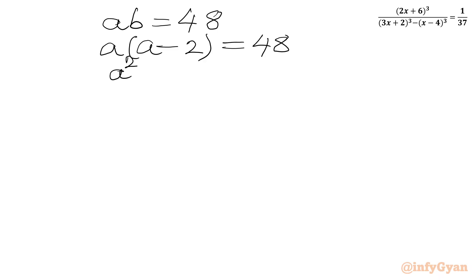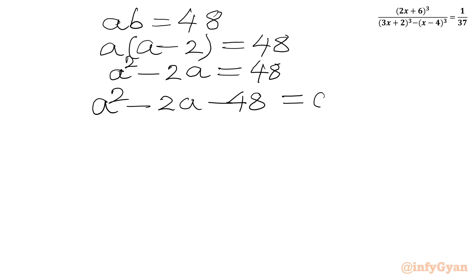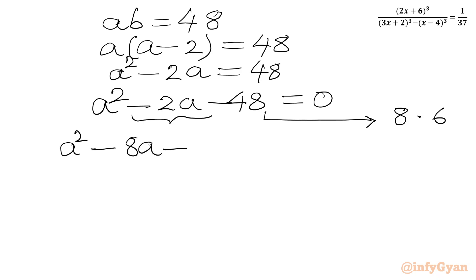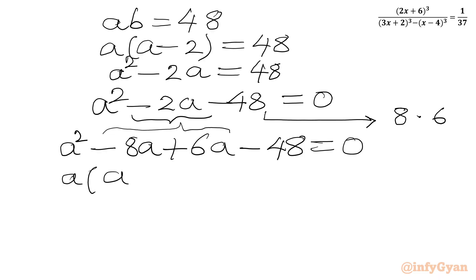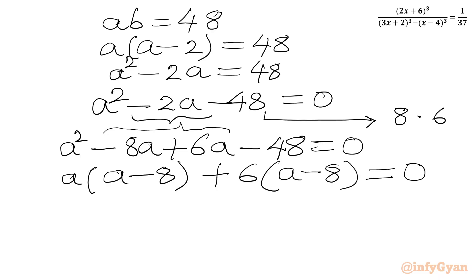This gives us a² - 2a - 48 = 0. This is a quadratic equation. Factoring 48 as 8 × 6, we split the middle term as -8a + 6a. Factoring: a(a-8) + 6(a-8) = 0, so (a-8)(a+6) = 0.